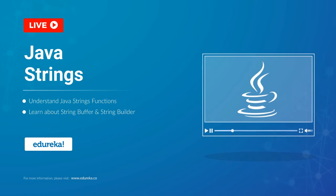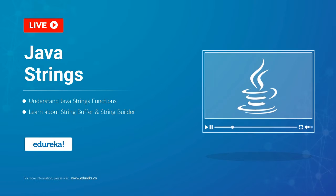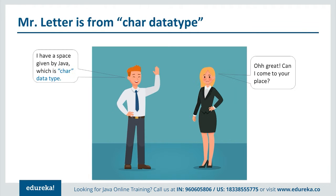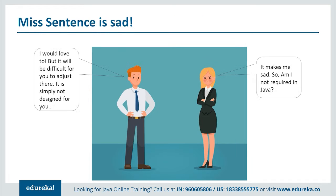Welcome everyone. Let's go through this analogy first. We have two characters here: the first one is Mr. Letter and the second one is Miss Sentence. Mr. Letter tells Miss Sentence that he has a space given to him by Java, called the character data type. Miss Sentence asks if she can join him, but he says unfortunately that space is simply not designed for her.